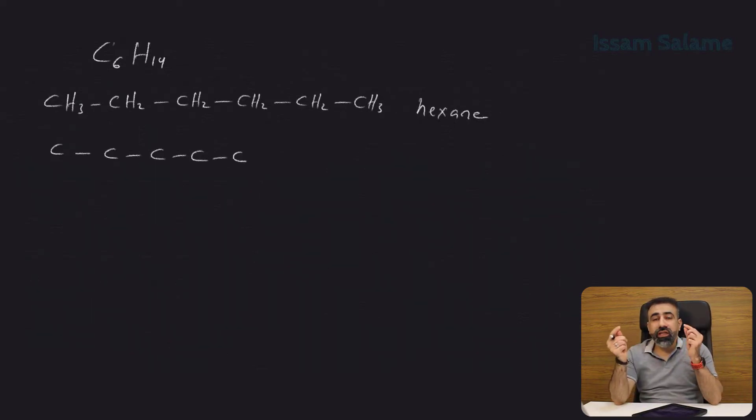We cannot add the sixth carbon to the end carbons because if we do this, we'll end up with the same structure as before. To get an isomer, you should get a different name. If two structures have the same name, then they are not structural isomers. For you to get a structural isomer, it should have a different name.